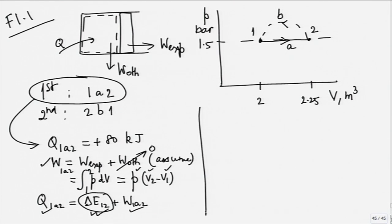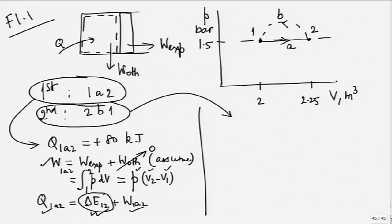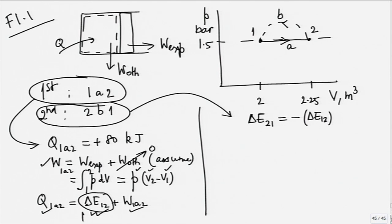Now come to the second part of the process. In the second part, what is given? The system is brought back to its initial state. That means delta E_21 will be equal to minus delta E_12. Why? One is E2 minus E1, whereas this will be E1 minus E2 - final is 1, initial is 2.